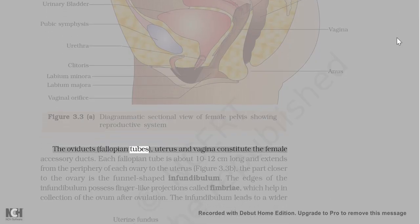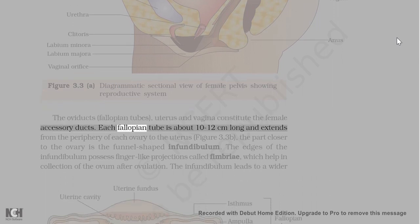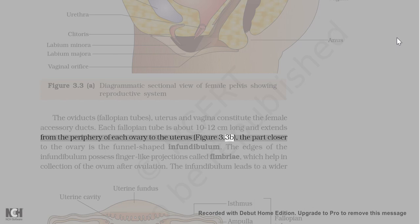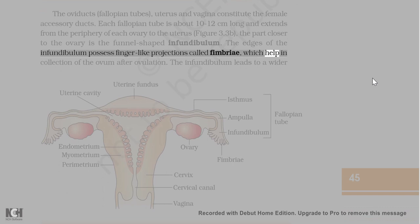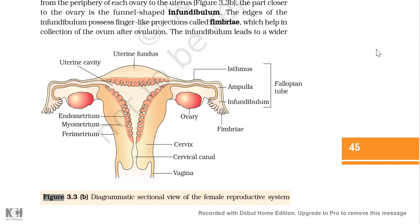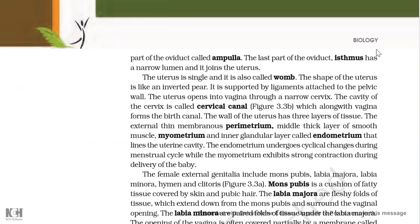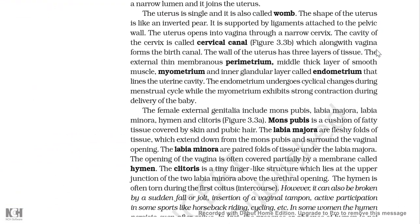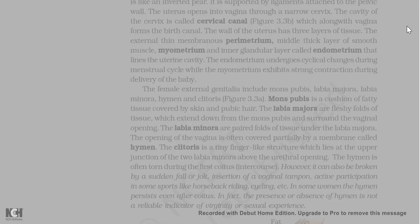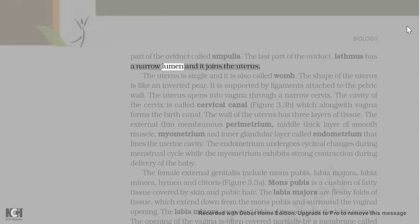The oviducts (fallopian tubes), uterus, and vagina constitute the female accessory ducts. Each fallopian tube is about 10-12 cm long and extends from the periphery of each ovary to the uterus. The part closer to the ovary is the funnel-shaped infundibulum. The edges of the infundibulum possess finger-like projections called fimbriae, which help in collection of the ovum after ovulation. The infundibulum leads to a wider part of the oviduct called ampulla. The last part of the oviduct, isthmus, has a narrow lumen and joins the uterus.